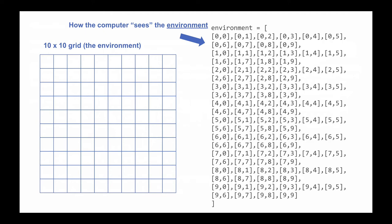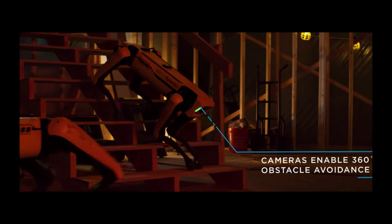Let's say the environment for the robot is a 10-by-10 grid of squares, with one step per square. A computer would represent this grid with 100 pairs of coordinates: the first number in a pair represents the row (0 to 9, giving 10 rows), and the second number represents the column (0 to 9, giving 10 columns). Keep in mind, if the robot had a machine vision system this wouldn't apply — then the robot's perception of the environment would come from cameras, as seen in the Spot video where the Boston Dynamics robot dog has multiple cameras.